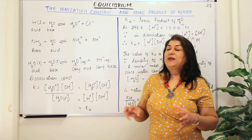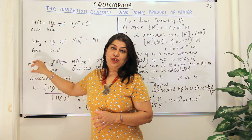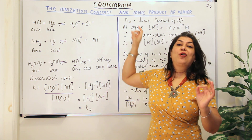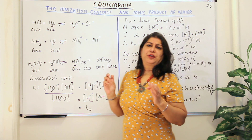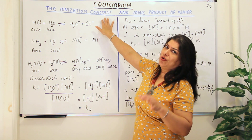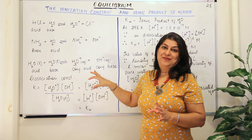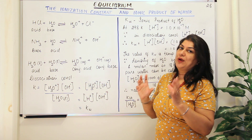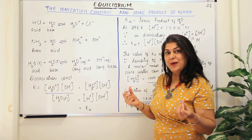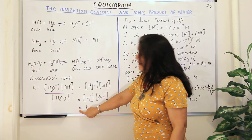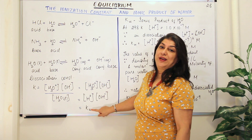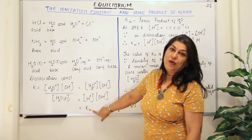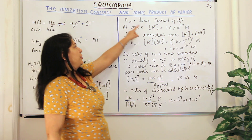These are the two ions formed as a result of the dissociation of water molecules, and since we are taking the product of only the ions, this is called the ionic product of water. The ionic product of water is the dissociation constant (or ionization constant) of water — only the liquid denominator is ignored. It is represented by Kw, where W represents water.